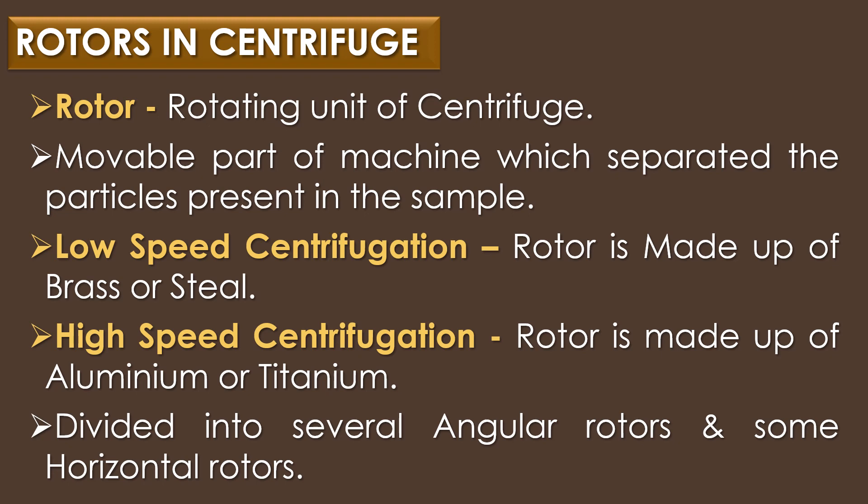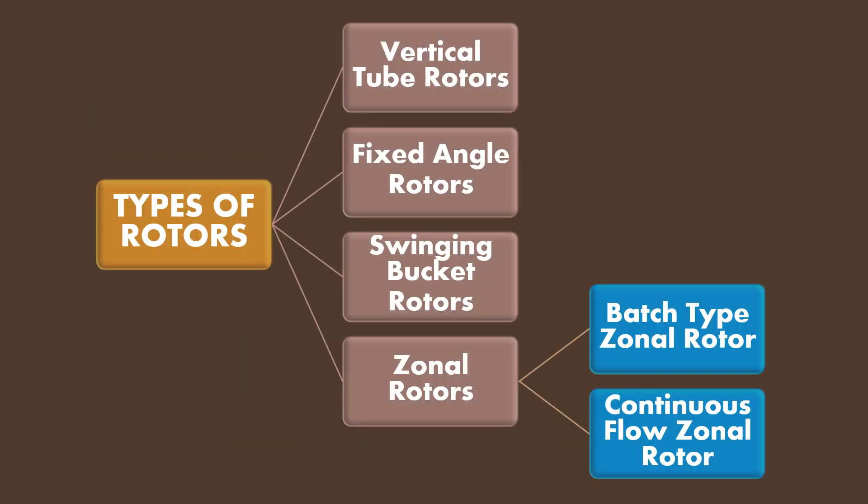The rotors are divided into several angular rotors and some horizontal rotors. The resistance in the horizontal rotors is larger than that in the angular rotors. There are four types of rotors: vertical tube rotors, fifth set angled rotors, swinging bucket rotors, and zonal rotors.